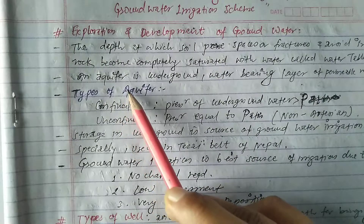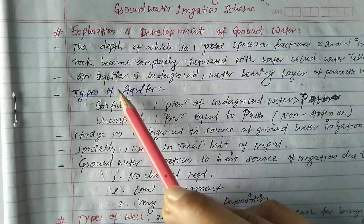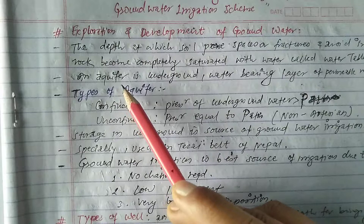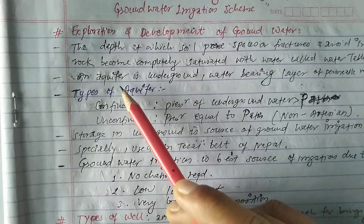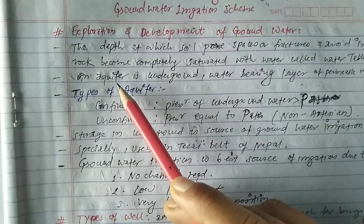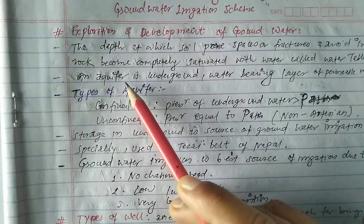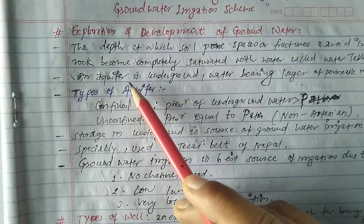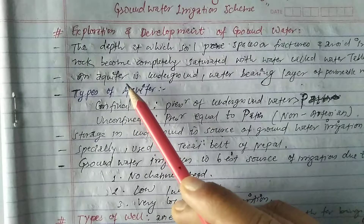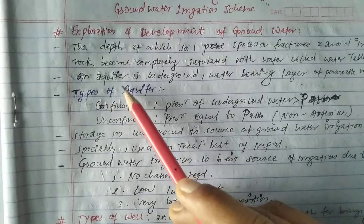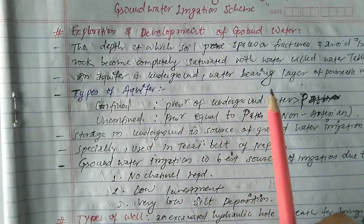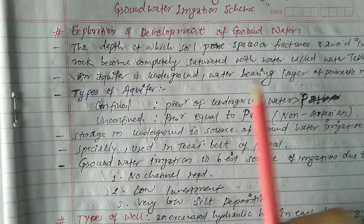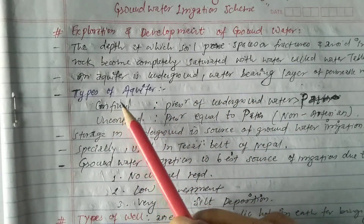An aquifer is an underground water-bearing layer of permeable rock. We need to know what an aquifer is and the different types of aquifer. This topic has already been discussed in a previous video on the channel. In brief here: an aquifer is an underground water-bearing layer of permeable rock.